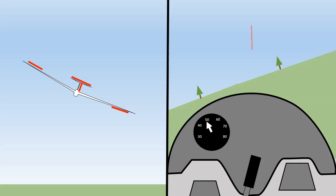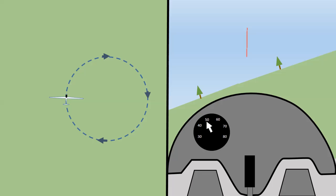Here's an example of a coordinated turn to the right. The stick has been moved to the right to roll the glider, and a corresponding amount of right rudder has been put in to keep the yaw string straight. Once we've reached the desired angle of bank we centralise the controls and apply a small amount of back pressure on the stick to keep the nose up and keep the glider turning. The glider will remain turning until we apply left rudder and left stick to level the wings and exit the turn.